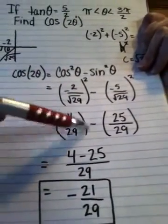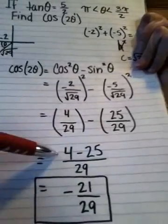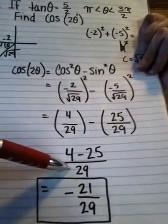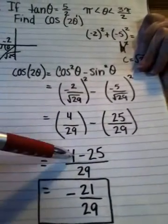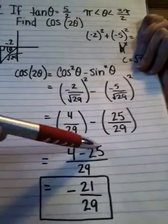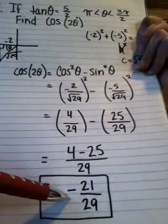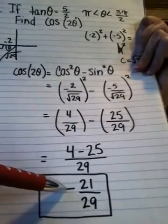With that being said, we square both sides. We get a common denominator of 29 because the radicals cancel out, and we subtract 4 minus 25, ending with negative 21 over 29.